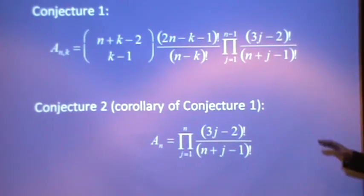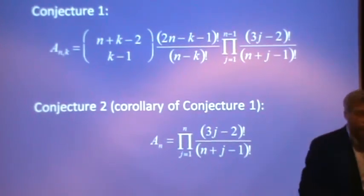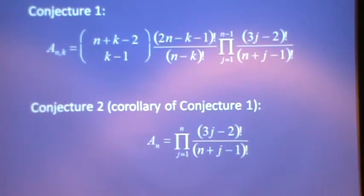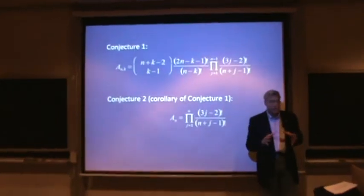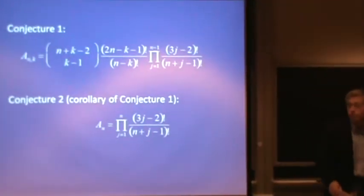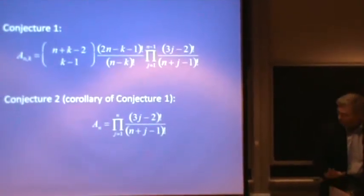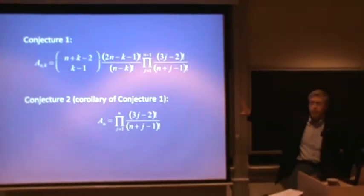So these became Dave Robbins' conjectures. He discovered these in 1980 and he disseminated them. Almost immediately, people began to find connections, connections to problems in plane partitions. And I talk a lot about that in my book. That's one of the main themes there, so I'm not going to go into that here.